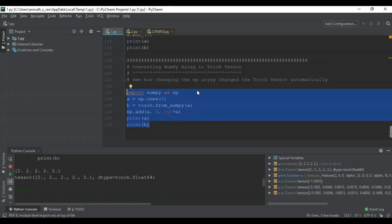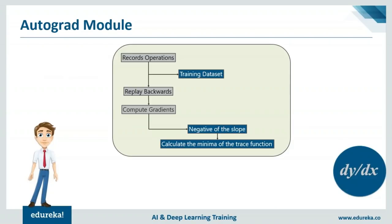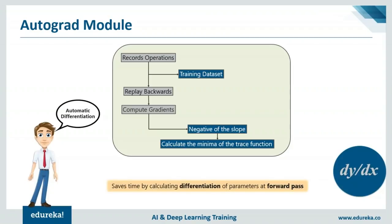The most important thing PyTorch has to offer is the autograd module, which provides automatic differentiation. Here's how autograd works: we record operations based on the training dataset, replay all values to reduce losses at every stage, and compute gradients. Gradients are computed by finding the negative of the slope and calculating the minimum of the trace function of the graph. Automatic differentiation saves significant time given the vast complexity of differentiation in neural networks.